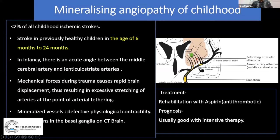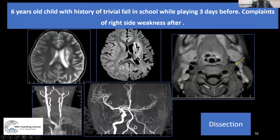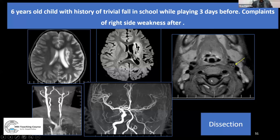Another case showed a child with recurrent infarcts in the left cerebral hemisphere. Vessel wall imaging and T1 fat-sat post-contrast MRI were performed — it is difficult to diagnose arterial dissection on standard MR angiogram or MRI, but T1 fat-sat sequences can show focal circumferential enhancement and an intimal flap within the vessel, which is diagnostic of arterial dissection.